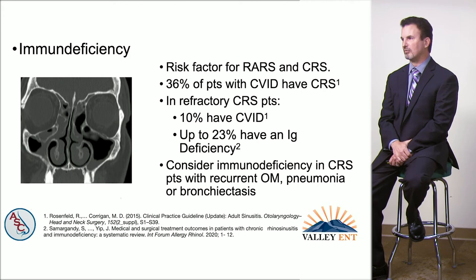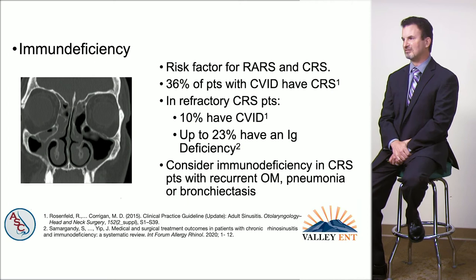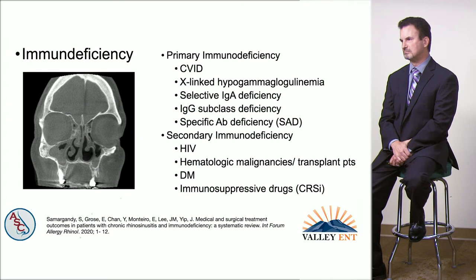Immunodeficiency is a risk factor for both recurrent acute and chronic rhinosinusitis. About a third of patients with common variable immunodeficiency have chronic rhinosinusitis, and in patients with refractory CRS, at least a third have an immunoglobulin deficiency. A take-home point: consider immunodeficiency workup in refractory CRS patients or in those with comorbid otitis media, pneumonia, or bronchiectasis.